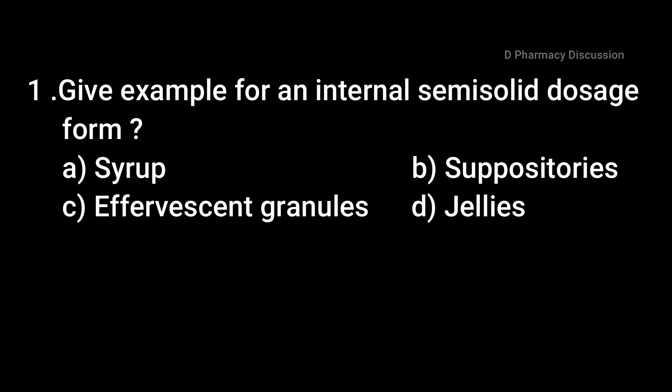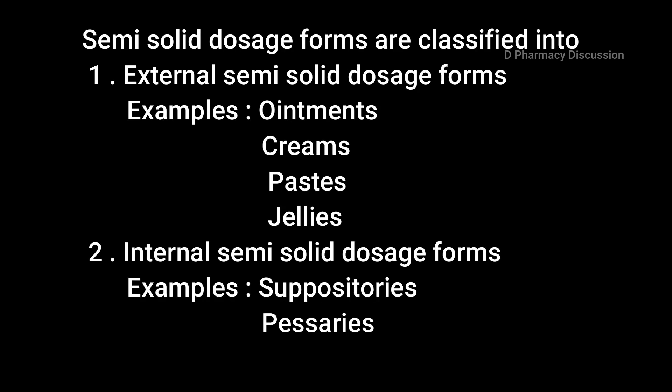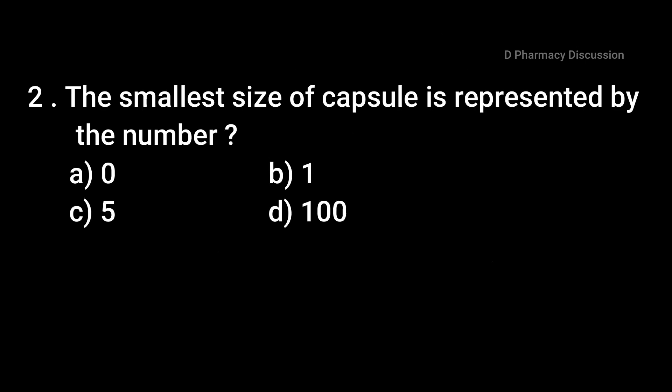Question 1: Give an example for an internal semi-solid dosage form. Option A: syrup, B: suppositories, C: effervescent granules, and Option D: jellies. The correct answer is Option B, that is suppositories. The semi-solid dosage forms are classified into external and internal semi-solid dosage forms. Examples for external semi-solid dosage forms are ointments, creams, paste, and jellies.